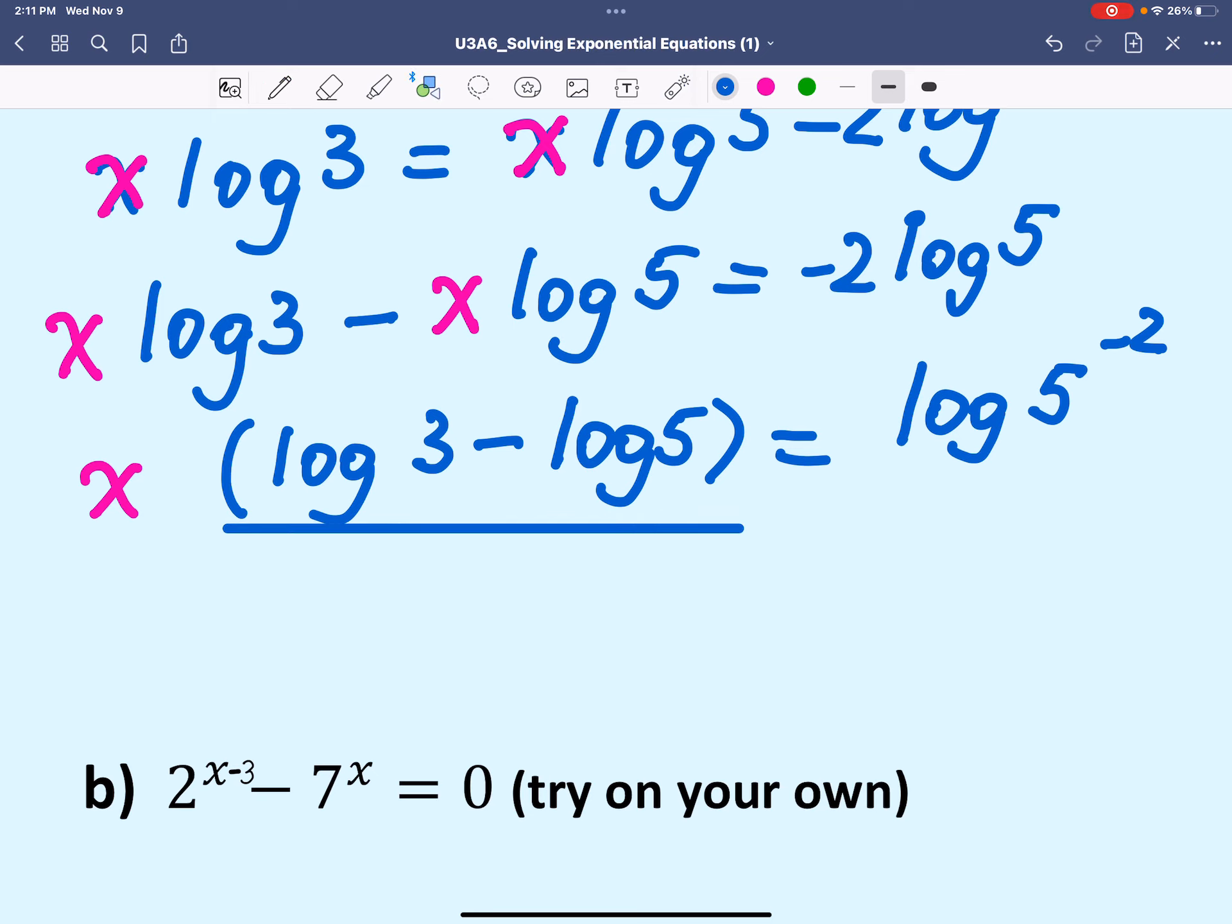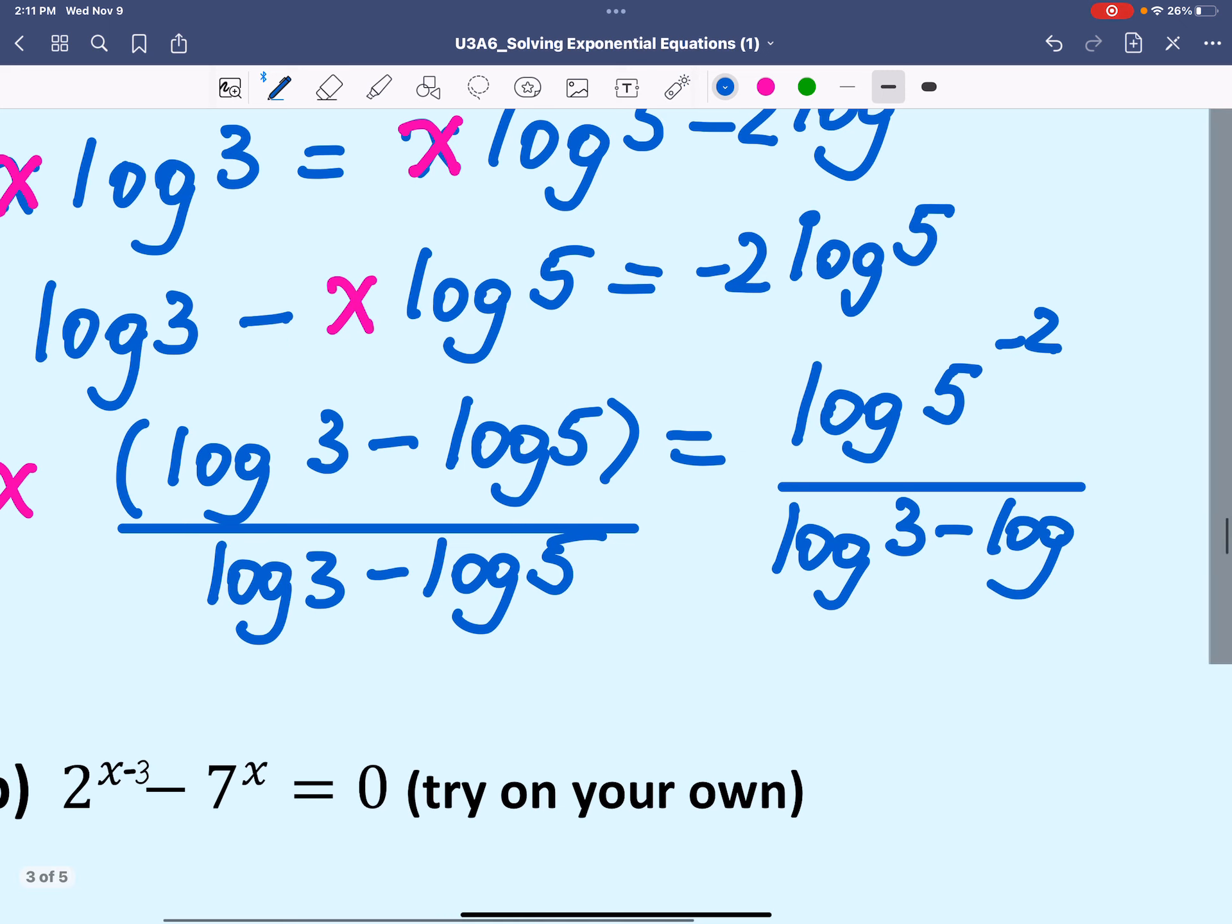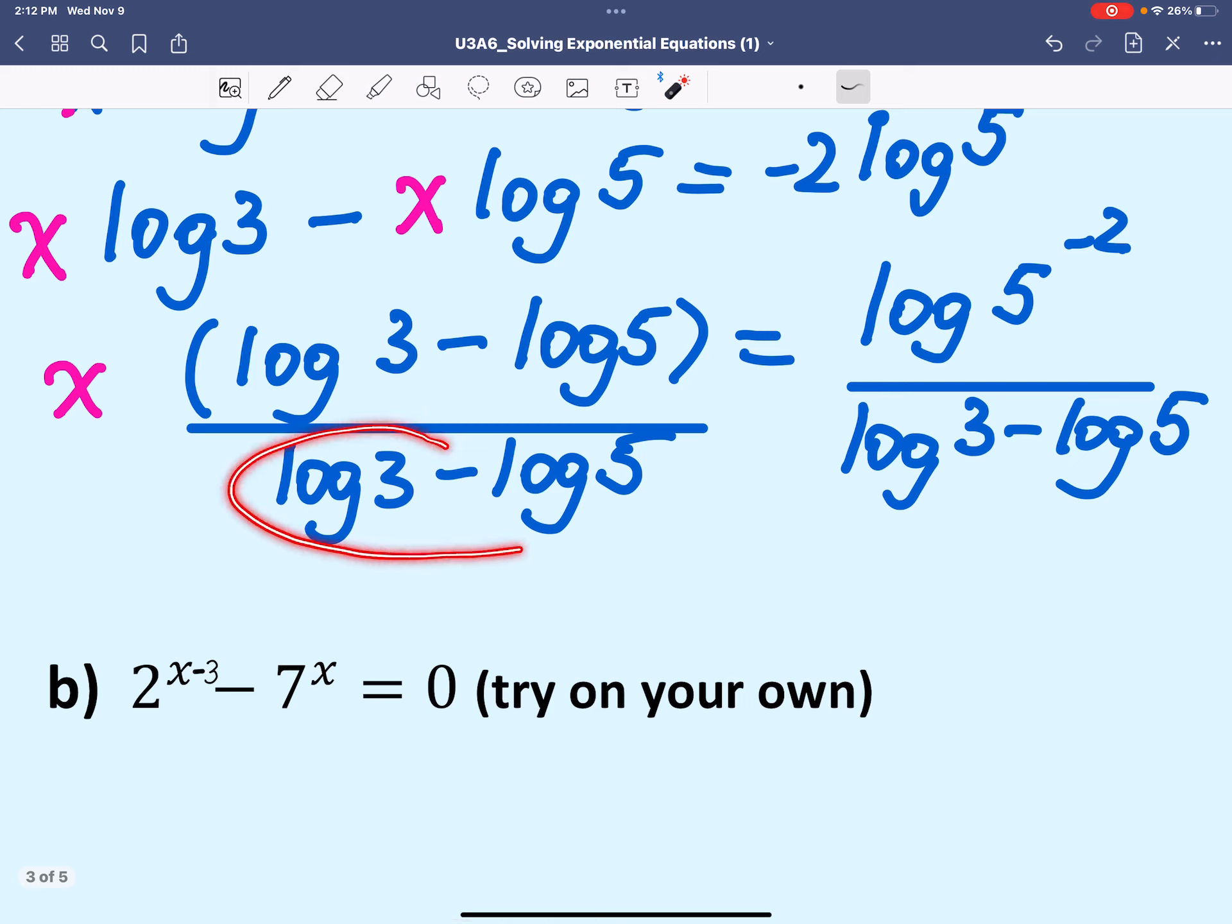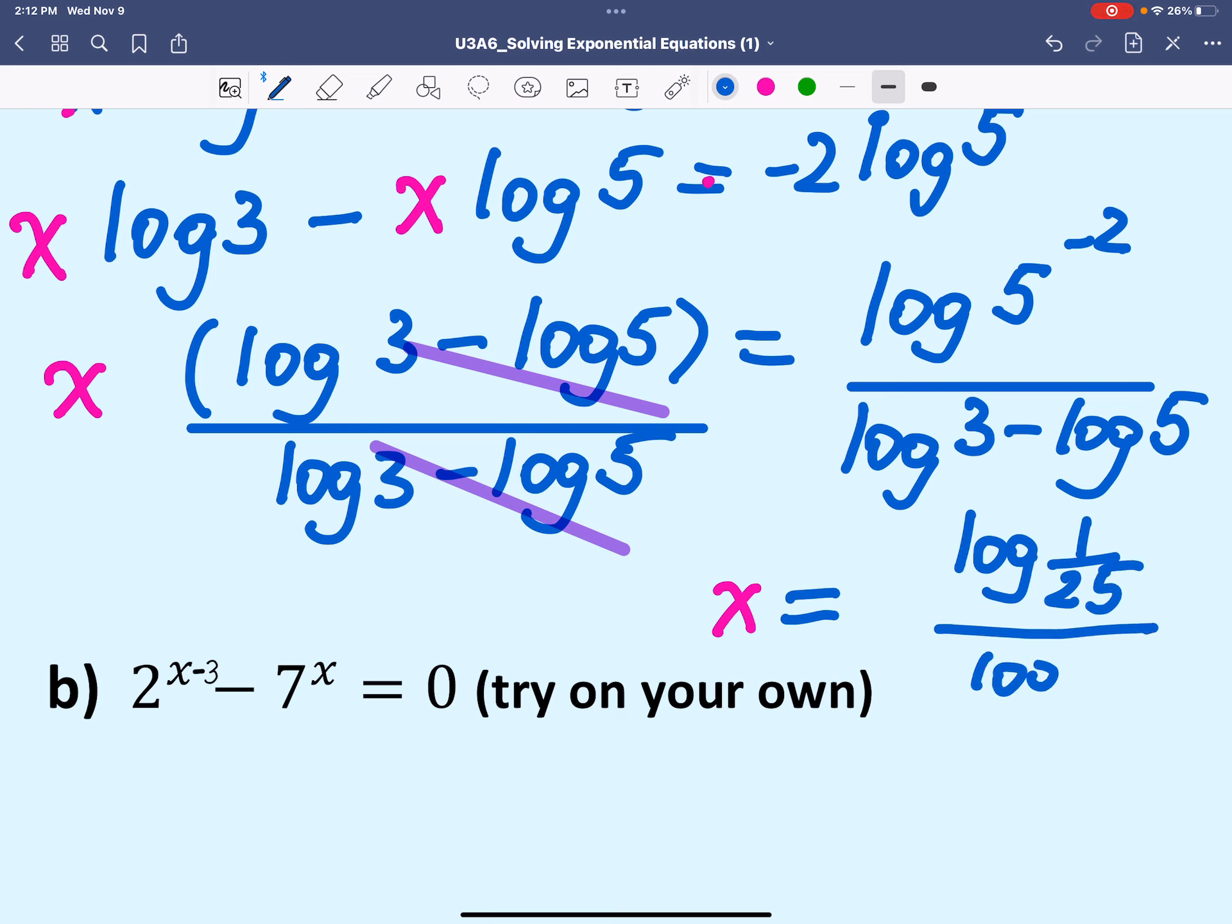In order to completely isolate x, we are dividing both sides by log 3 minus log 5. Another way of seeing log 3 minus log 5 is by using the quotient rule. Instead of writing log of 3 minus log of 5, you can rewrite this as log 3 divided by 5. We have x all by itself now on the left side, which equals log of 5 to the negative 2, which is log of 1 over 25, over log of 3 over 5.